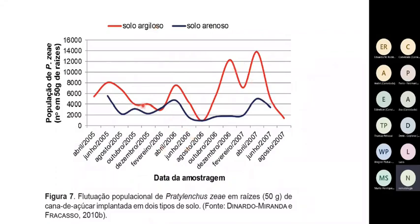Posso ter até mais nematóides num solo argiloso do que no arenoso. Aqui tenho dados de dois ensaios em áreas próximas mas com tipos de solo diferentes, mesma variedade. No solo argiloso tenho até mais nematóides de Pratylenchus do que no solo arenoso. Ter um solo argiloso não é impedimento para ter problemas com nematóides. Mas para que o problema num solo argiloso justifique o uso de nematicidas, é necessário ter uma população muito mais alta do que num solo arenoso.